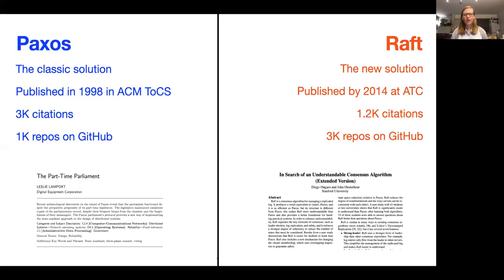On the other hand we've got Raft, the newcomer on the block which was pitched as being a more understandable alternative to Paxos. It was published in 2014 at ATC. In fact, it won the best paper at ATC, and despite the fact it's just six years old it already has 1,200 citations and 3,000 repositories on GitHub.